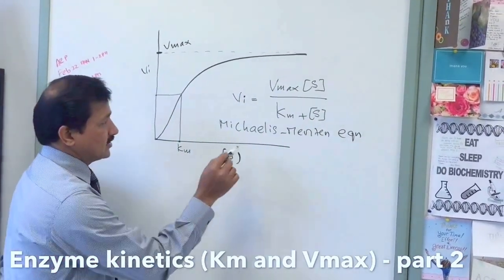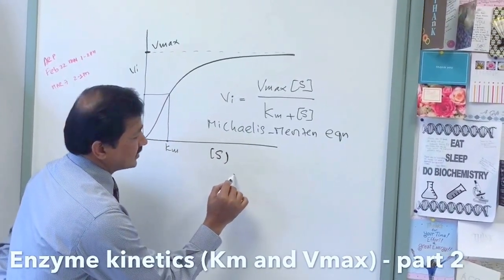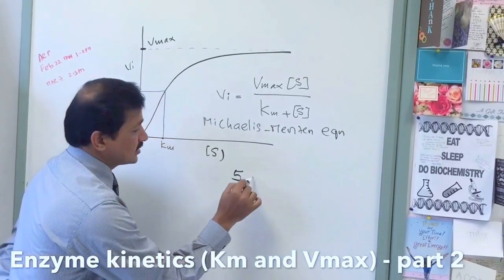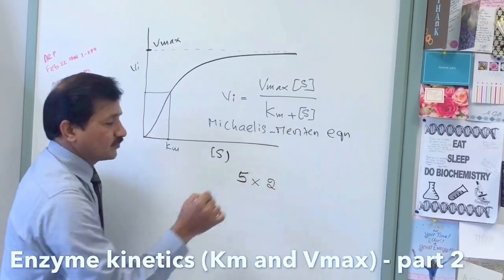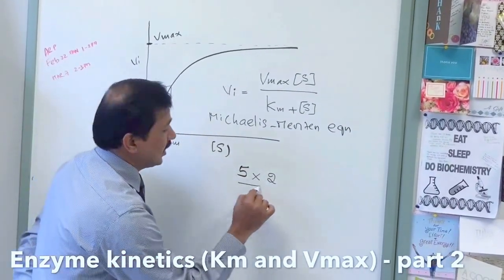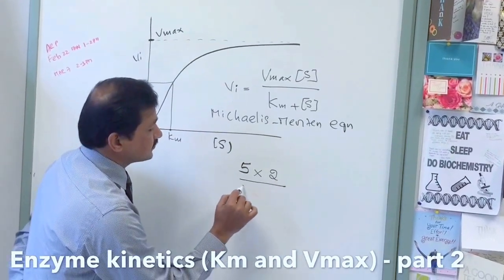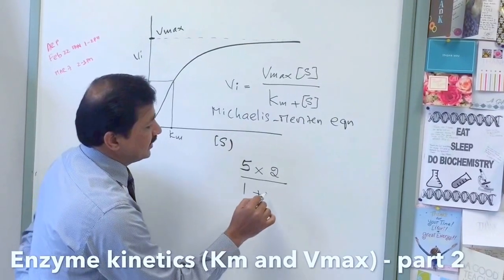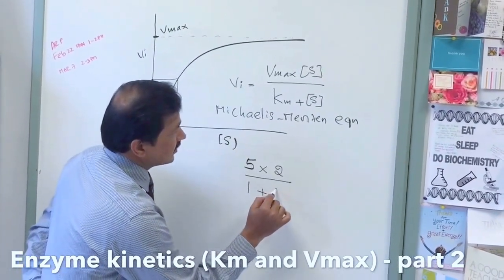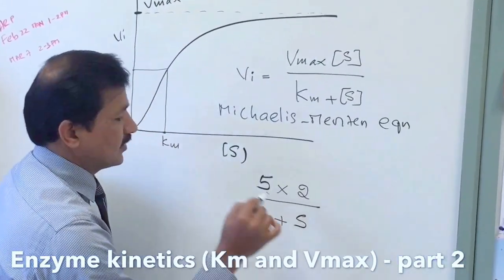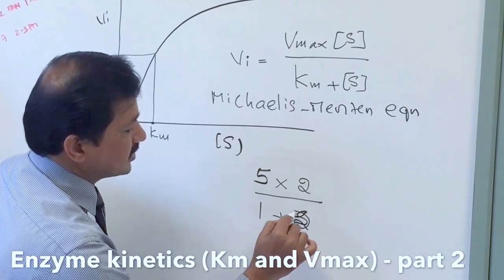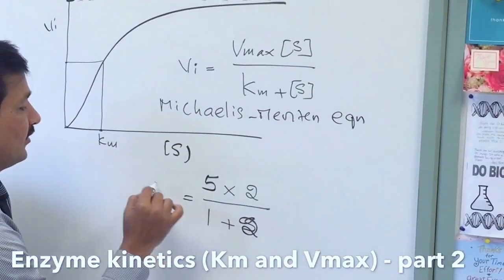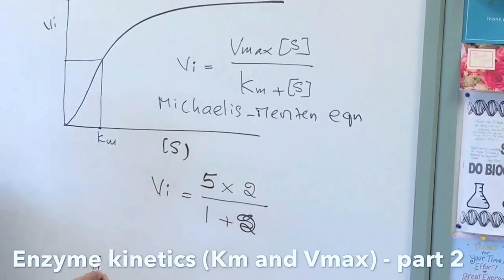Let's do some problem with this. Consider that the maximum velocity of the reaction Vmax is 5, the substrate concentration is 2, that is S is 2, and Km is 1, and substrate concentration is again 2 here. So what is the velocity of the reaction?